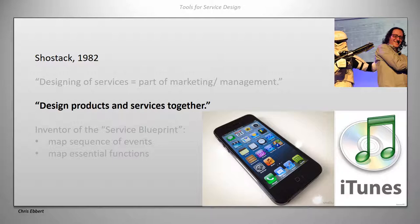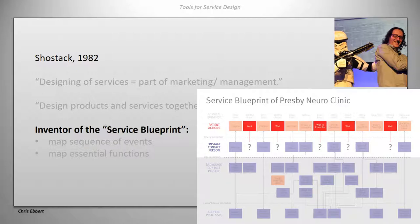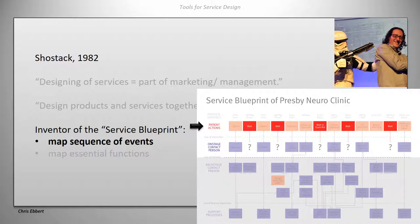For example, mobile phones. A mobile phone isn't just an object — there is a lot of service going on around it, and that is a designed experience as well. Shostak is also the man who actually gave us the service blueprint, which we have now seen too many times already — it is a map of a sequence of events showing all the different functions.